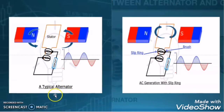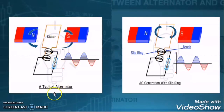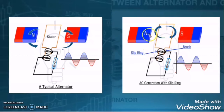Now, what is an alternator? When we are rotating the magnetic field with respect to the coil, that machine is called an alternator. But when we are moving the coil with respect to the magnet, then we call it a generator.